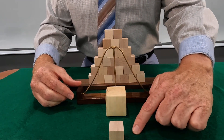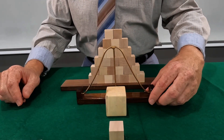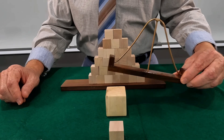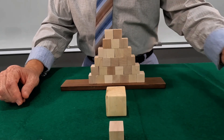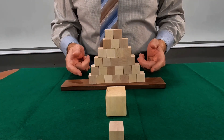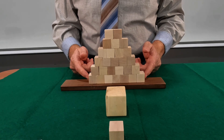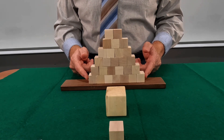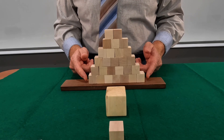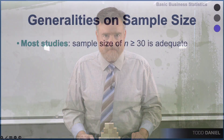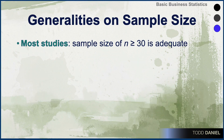If, however, the sample data are not normally distributed, then the population cannot be assumed to be normally distributed, and so now you must consider sample size. We need to assure that the sample size is large enough. Here are some general rules that we can apply to learn how large our sample size needs to be to satisfy this assumption of normality for the distribution of sample means. For most studies, a sample size of around 30 is going to be adequate.